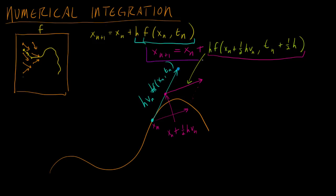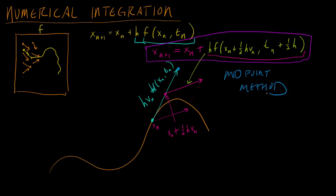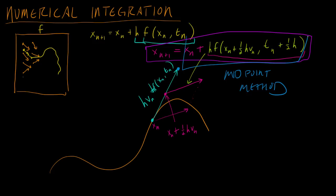This is our new method, called the Midpoint Method — so called because you go to the midpoint of the Euler step, do a new function evaluation there, and use that as the new prediction. As you can see, it gets us much closer to where the actual point should be than Euler alone. Let's hop over to the code and see this in action.